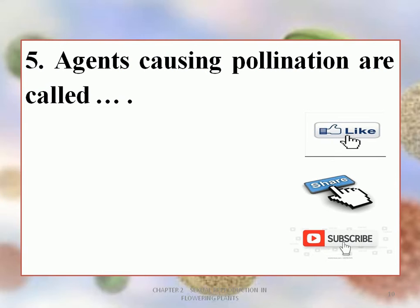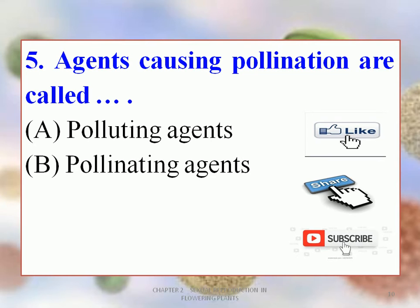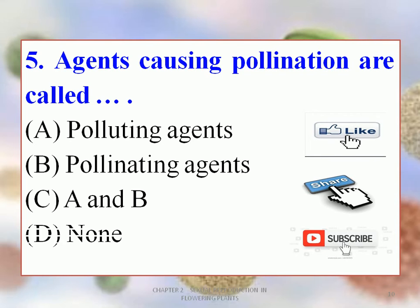Fifth MCQ: Agents causing pollination are called dash. Options: A. Polluting agents, B. Pollinating agents, C. A and B, D. None. The correct option is B. Pollinating agents. Yes, the agents which help in pollination are called pollinating agents.